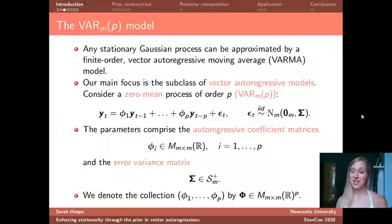The parameters of my process therefore comprise the autoregressive coefficient matrices φ1, φ2 and so on. And these are just m by m square matrices with real valued entries. And then our error variance matrix Σ, and this error variance matrix just has to be symmetric and positive definite. In this talk I'm going to denote the collection of my autoregressive coefficient matrices so φ1 through φP by capital Φ, and then this lies in this Cartesian product space here.